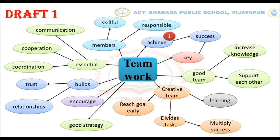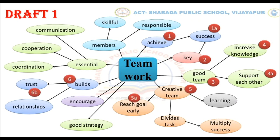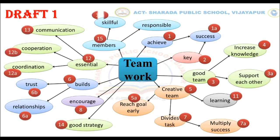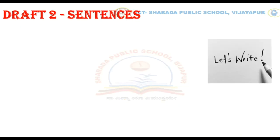Number 1 — 'achieve' and 'success': both will be used in sentence number 1. Number 2 — 'key': this word will be used in sentence number 2. Number 3 — 'good team': will be used in sentence number 3. Number 3a — 'support each other': both 'support each other' and 'good team' will be used in the same sentence. Similarly, give numbers to all other words in draft 1.